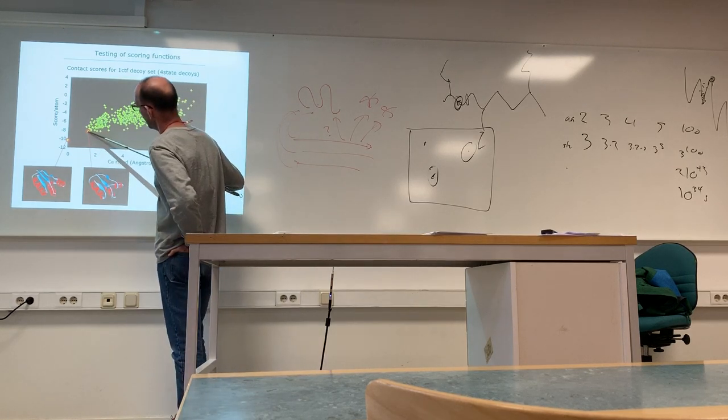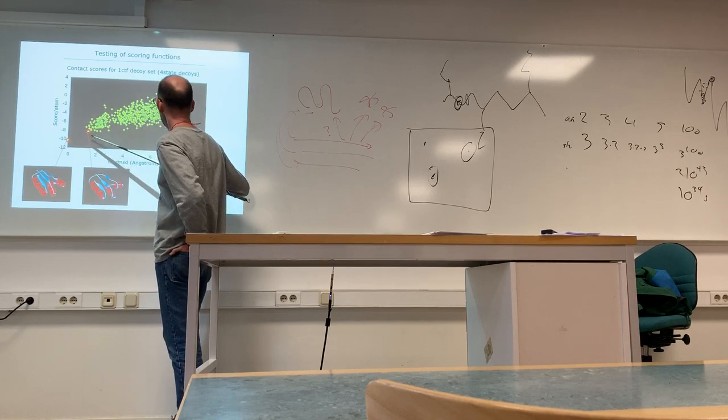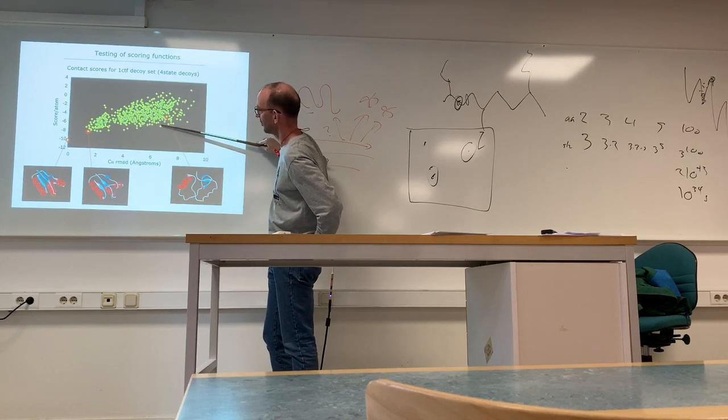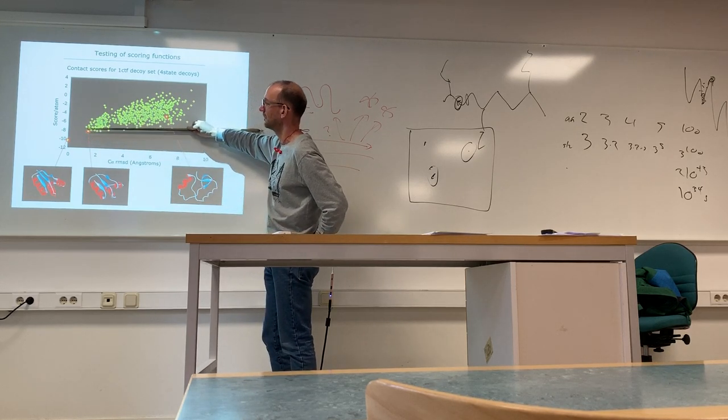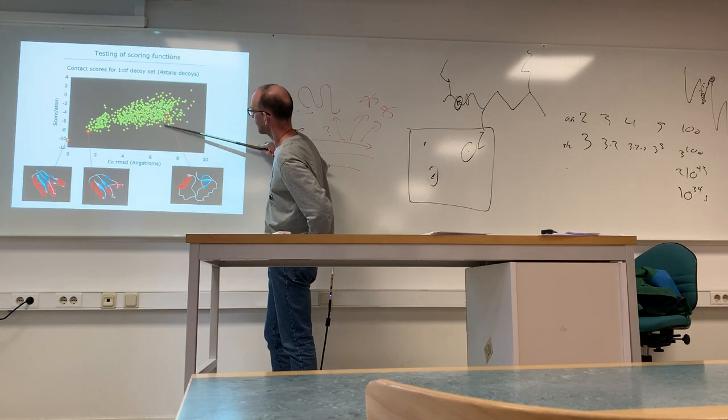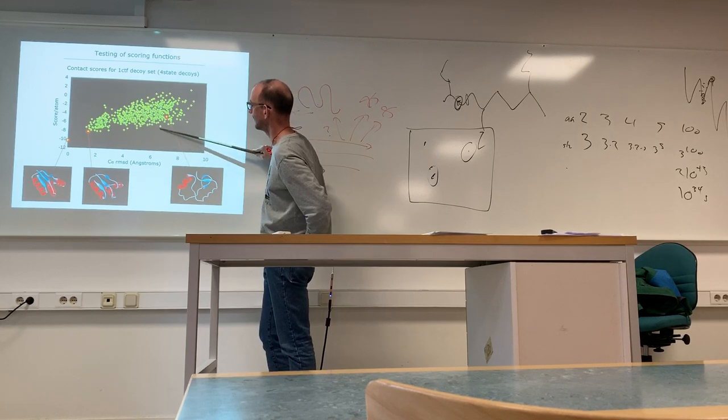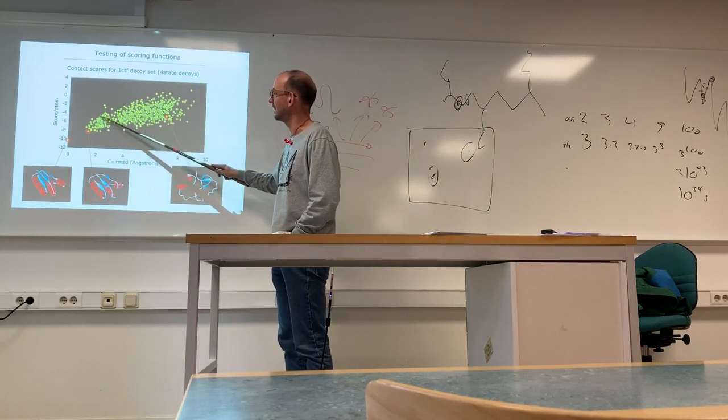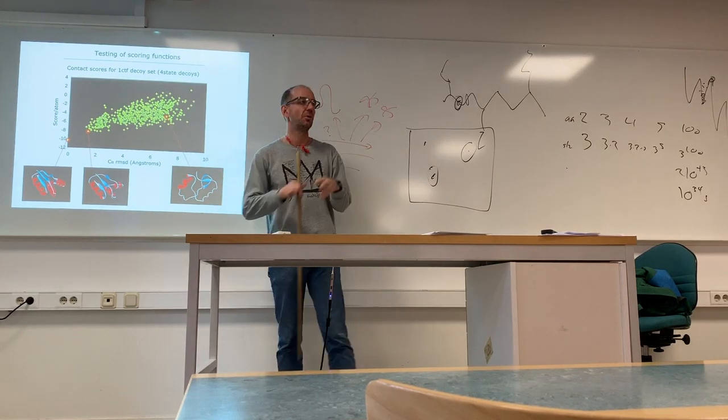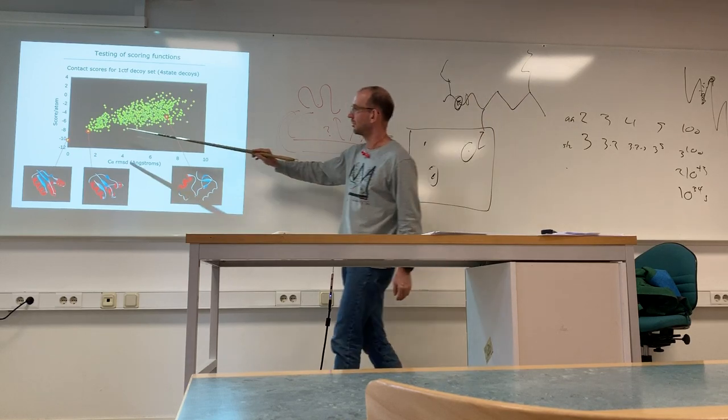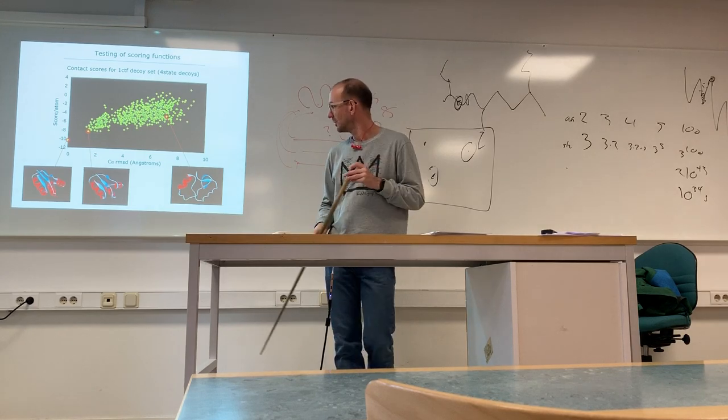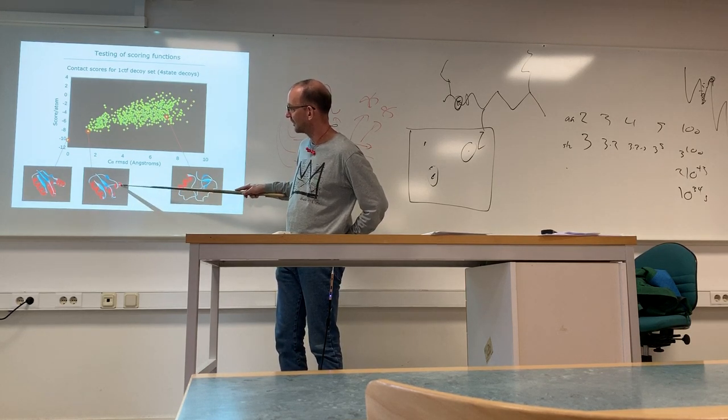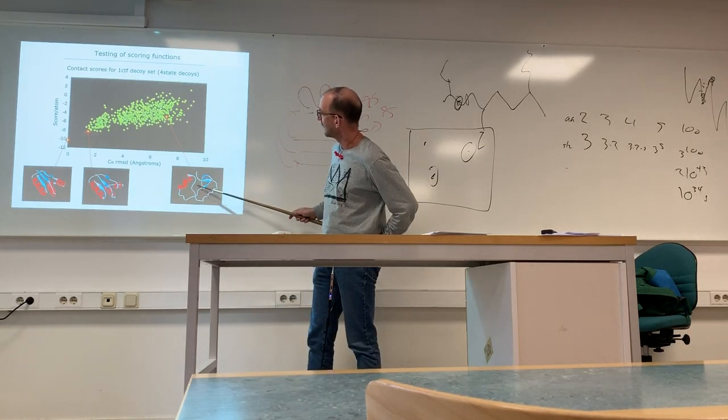This is how things will look like - how far away you are from the native structure versus the energy score. In this case, the energy score for the native structure is lower than anything else. It's not always the case for all potential functions, but in this case it is. The energy difference between structures that are quite wrong is very small. But if you do clustering, you would see that you have a big cluster near the native structure because those models are similar to each other.